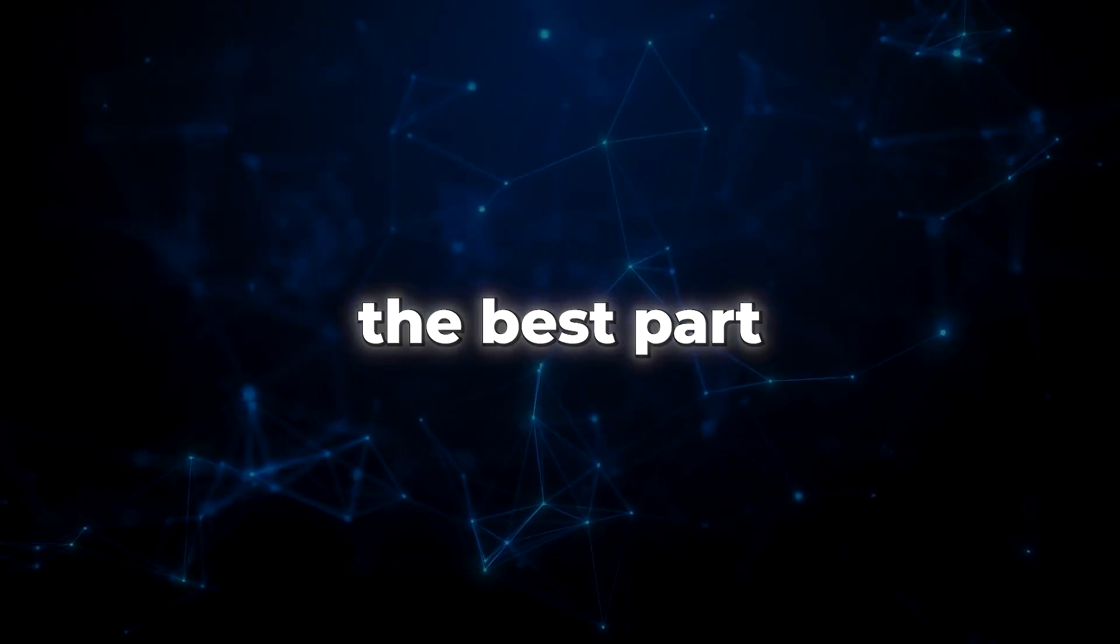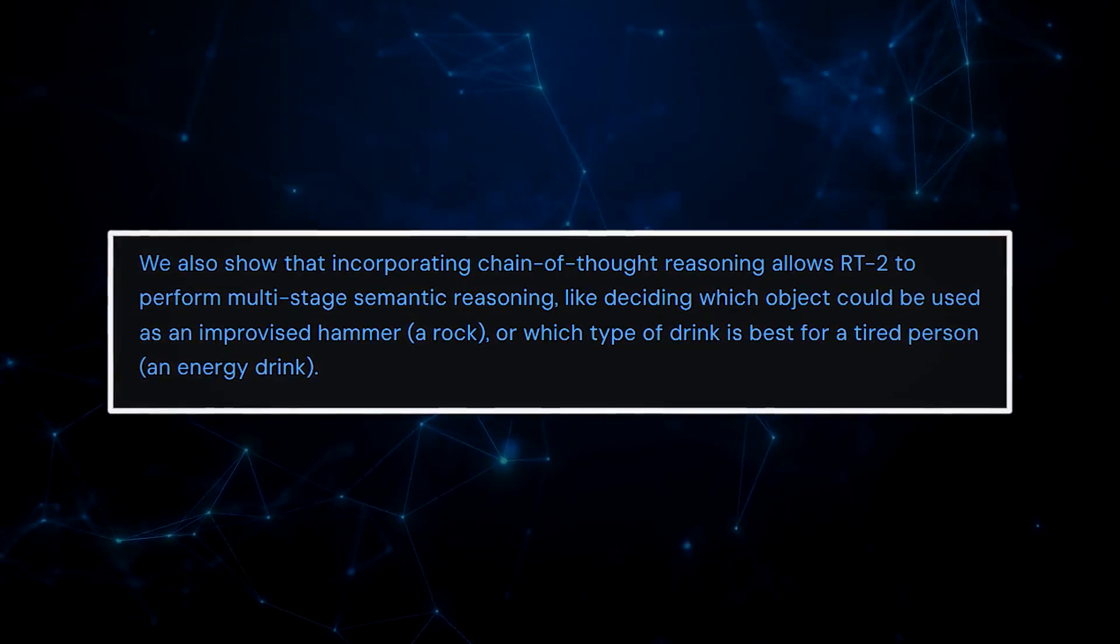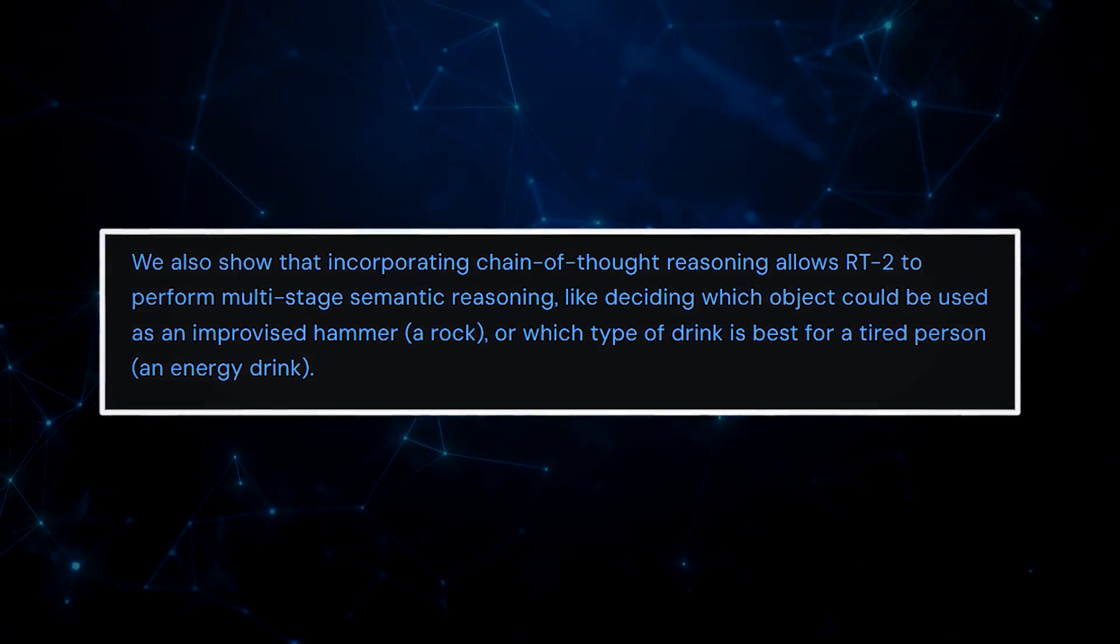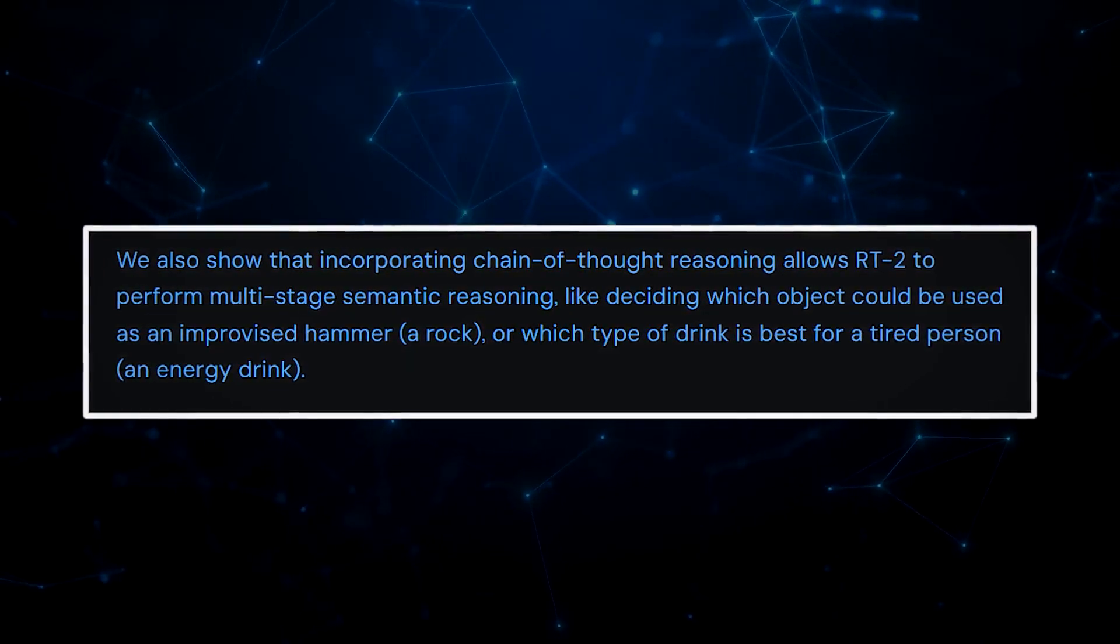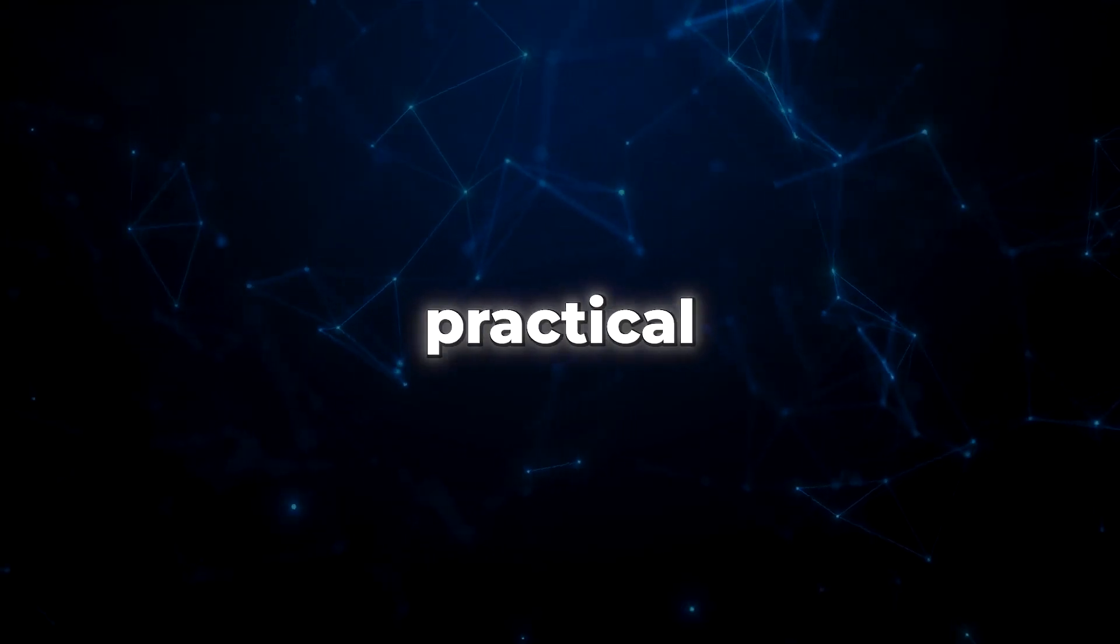But here's the best part. RT2's chain-of-thought reasoning lets it perform mind-blowing multi-stage semantic reasoning. It can figure out what objects can be used in clever ways, like turning a rock into an improvised hammer. And it's not just practical, it's considerate too. RT2 can determine the best drink for a tired person.